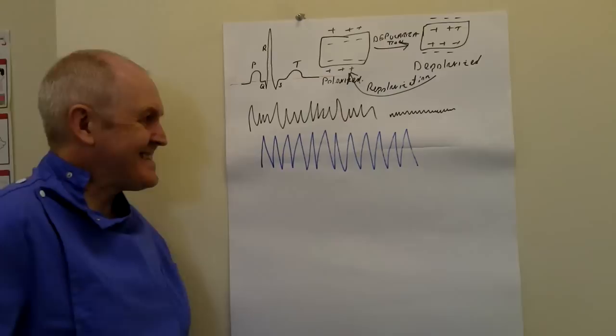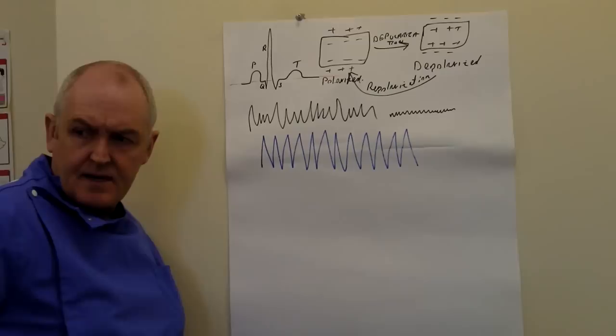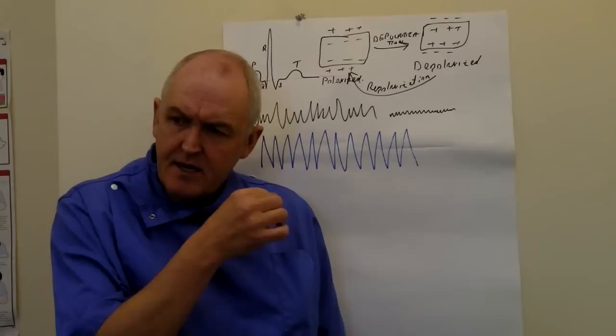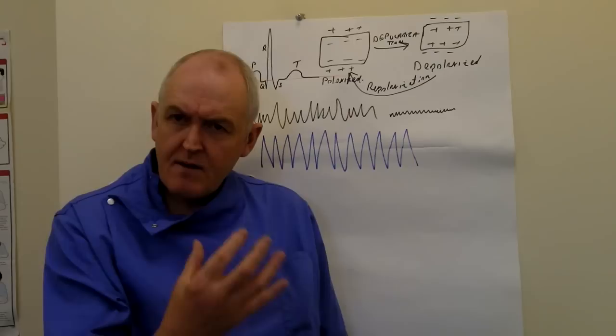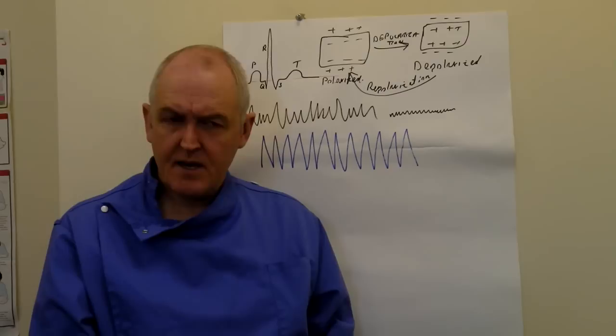If ventricular tachycardia isn't treated, it will change into ventricular fibrillation. The reason is usually an ectopic electrical focus in the myocardium which is generating impulses — a pathological lesion in the ventricular myocardium generating electrical impulses more quickly than the impulses coming from the sinoatrial node, so it takes over. We call this an ectopic electrical focus.